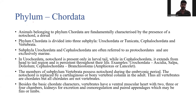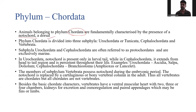Coming to the phylum Chordata, animals belonging to higher groups belong to this phylum. They are fundamentally characterized by the presence of the notochord. So all animals where notochords are present come under phylum Chordata. This phylum has been divided into mainly three subphyla: Urochordata or Tunicata, Cephalochordata, and Vertebrata.